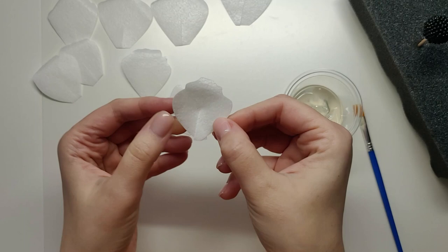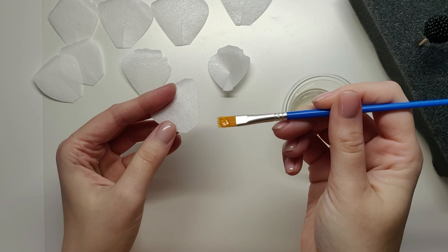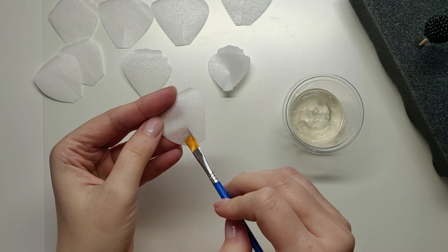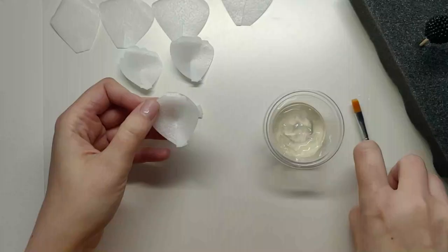I'm going to do this to all my petals, applying a little bit of piping gel only on one side, and then stick it together, cup it, and leave it on the side for a second.